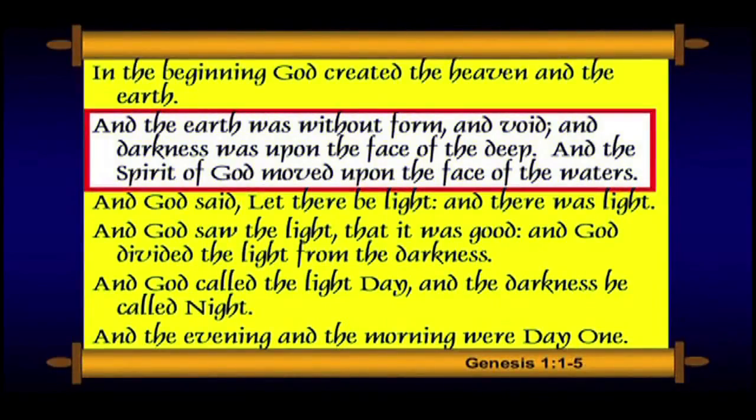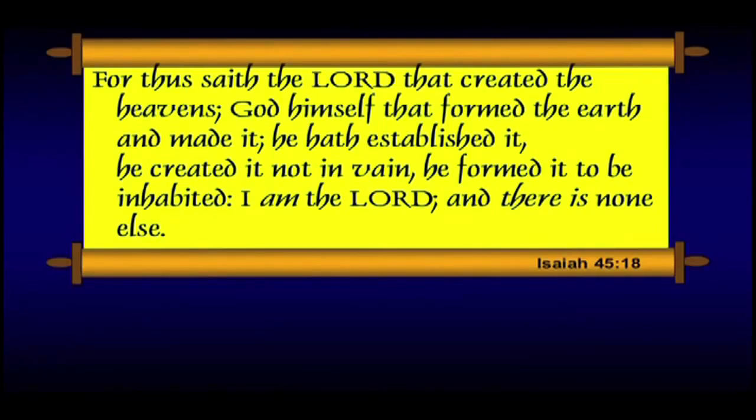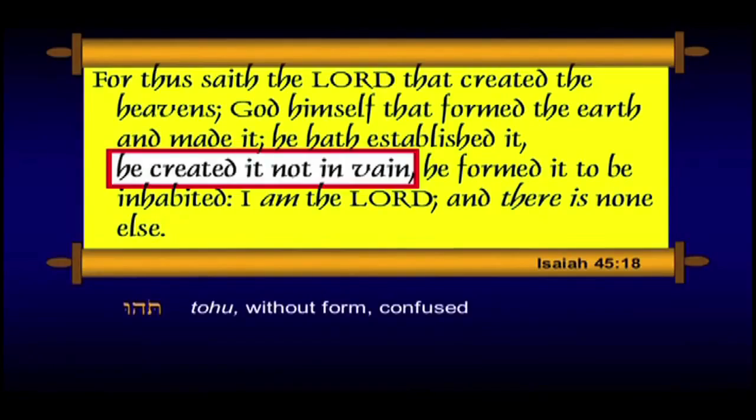When we get to Isaiah 45, we find a strange phrase. Verse 18: 'For thus saith the Lord that created the heavens, God himself that formed the earth and made it — he hath established it, he created it not in vain.' That seems to contradict Genesis 1:2. The earth was without form and void — tohu vabohu — but God says 'I didn't create it tohu vabohu.' He formed it to be inhabited. Whenever you find an apparent contradiction in the Bible, rejoice, because behind that will lie a discovery — what a rabbi would call a remez, a hint of something deeper.